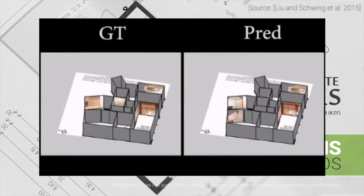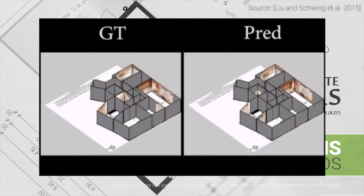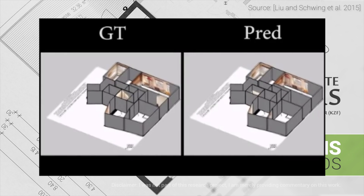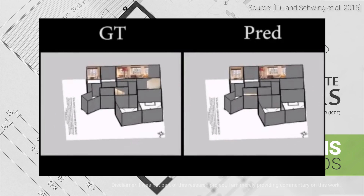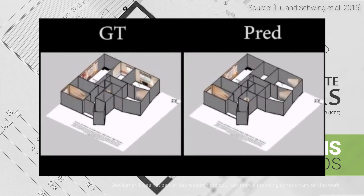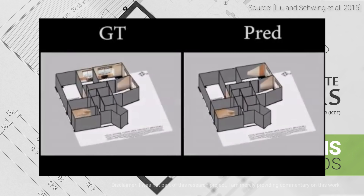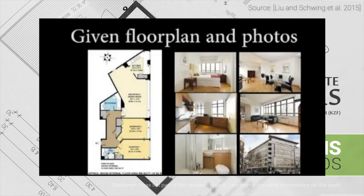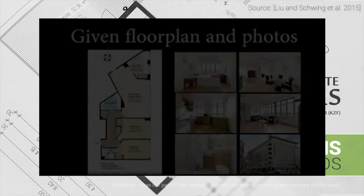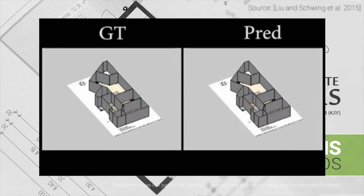As always, there is a link to it in the video description. Since the space of possible solutions is still too vast, a branch and bound type algorithm is proposed to further decimate the number of potential solutions to evaluate. And as you can see here, the comparisons against ground truth floor plans reveal that these solutions are indeed quite faithful to reality.